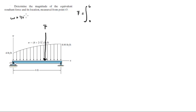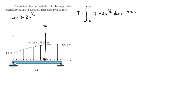W is equal to 4 plus 2x to the 1/2. So the integral becomes 4 plus 2x to the 1/2 dx, which equals 4x plus 2x to the 3/2 over 3/2, evaluated from 0 to 6.